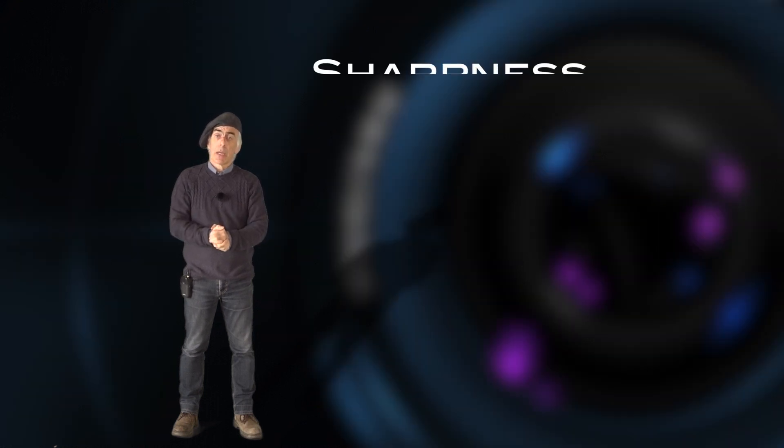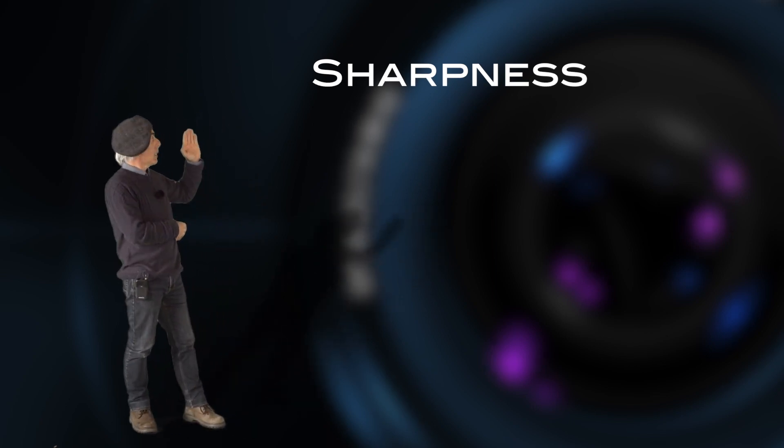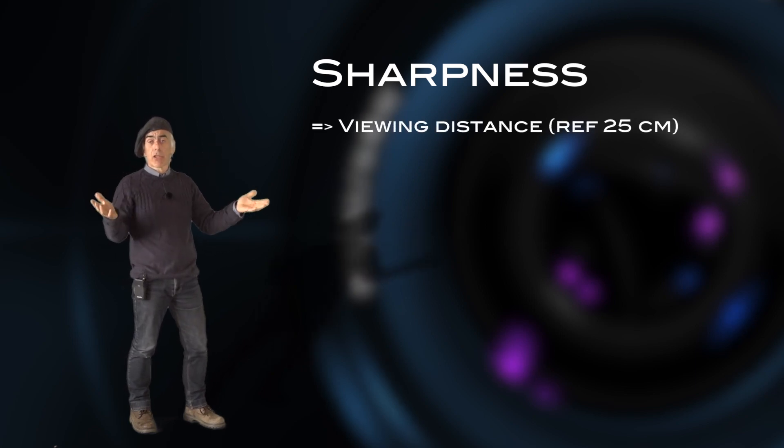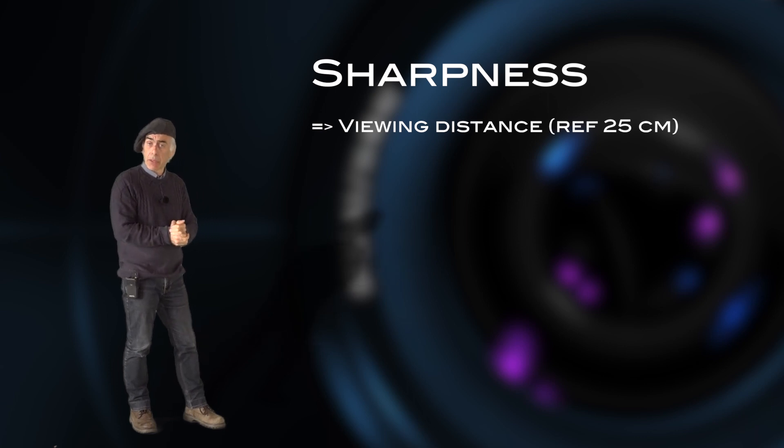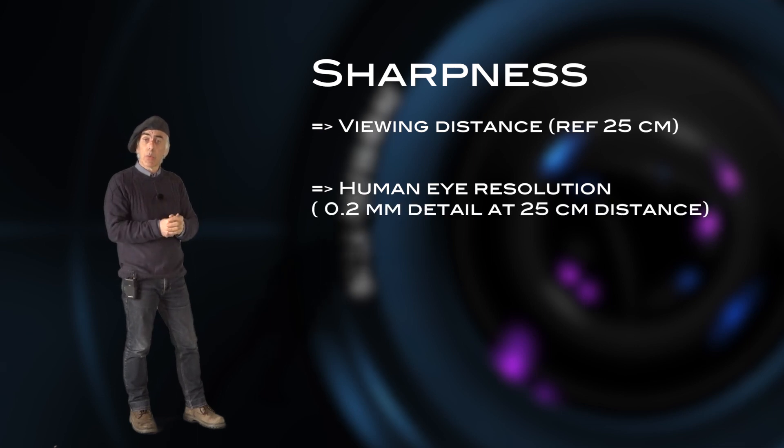So now the word sharpness has fallen. Sharpness is determined by three factors. It's determined by the viewing distance between you and the picture, and let's say on average we talk about 25 centimeters. Secondly, it's affected by the ability of the eye to distinguish detail.